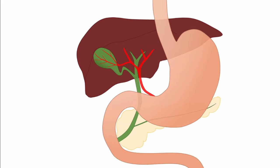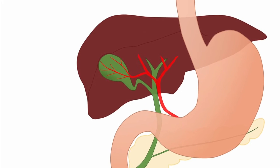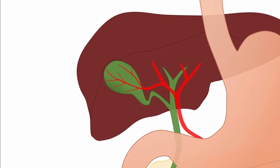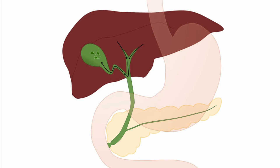The gallbladder is a sac-like organ that sits beneath the liver. The gallbladder stores bile produced by the liver. The bile travels down the bile ducts from the liver into the gallbladder, where it is stored. When you eat a meal, especially a fatty meal, this triggers release of the bile which travels down the bile ducts into the first part of your small intestine. This bile helps break down and absorb fatty foods.